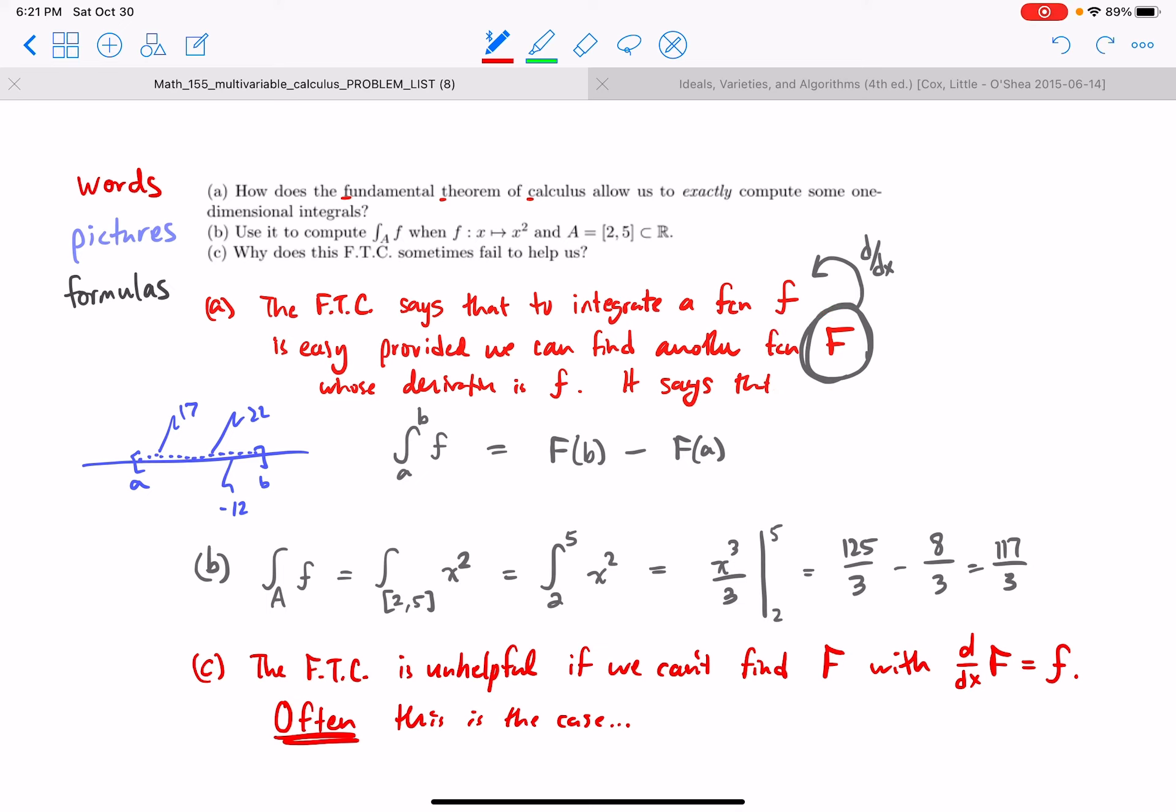So only for certain special things do we actually know how to find this F. Computers can help. Integration tables can help - people who have found capital F for various small fs. The whole thing is sort of ridiculous, it's just like this guess game. It can be really fun, but it's important to realize that it doesn't always work.